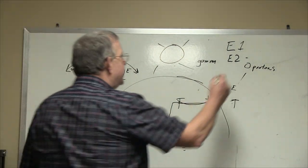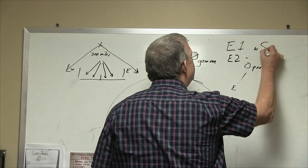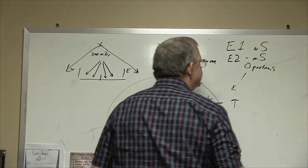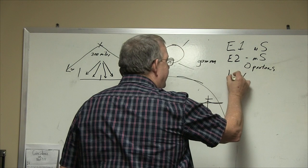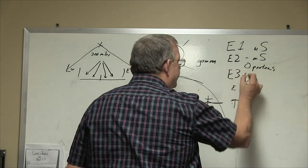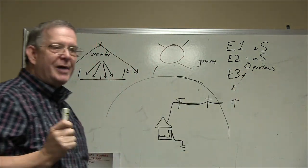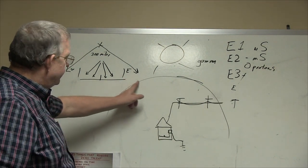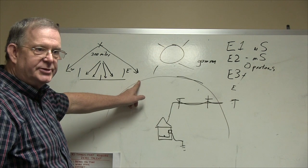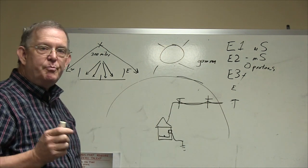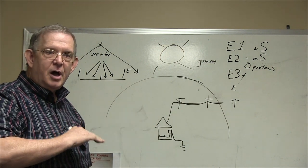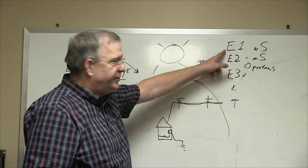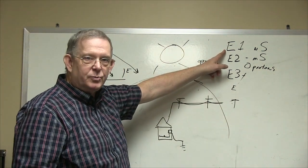One is in nanoseconds. E2 is in milliseconds, and then the E3 travels slow. And it might take 30 minutes to get to the east coast or west coast, but it is long and drawn out. These hit and they're finished and they're out of the way.